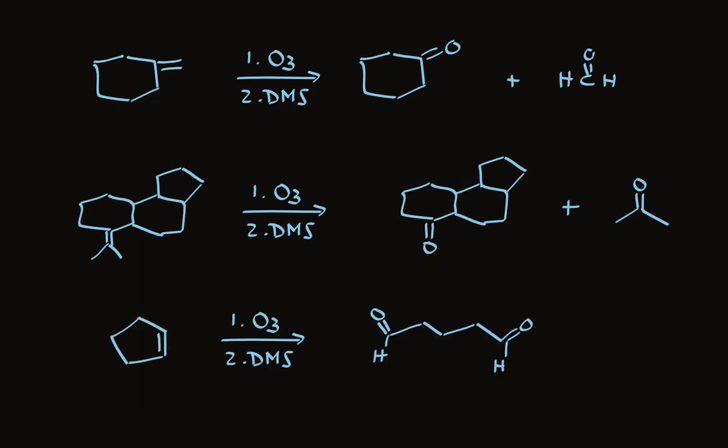And take a look at this. If the double bond is part of a ring, when you cleave the double bond to make the dicarbonyl compound, those carbonyl groups are still attached together. It's a good way to make a dialdehyde.